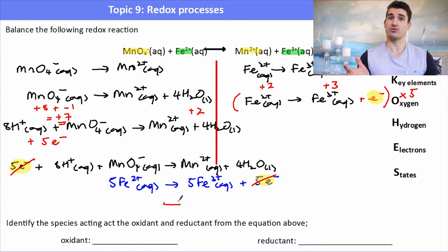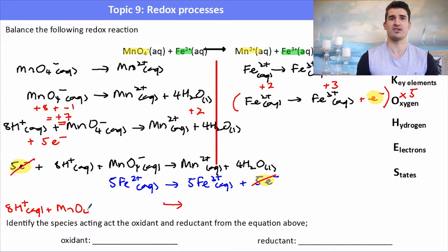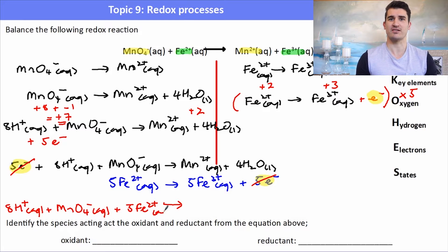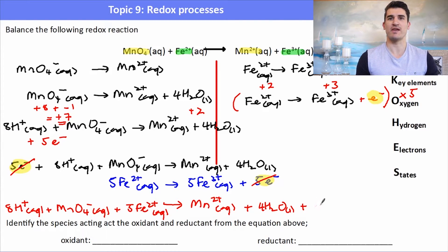I cancel the electrons, then put everything on the left of the arrows on the reactant side and everything on the right of the arrows on the product side. Because we've gone through the process of balancing at each step and balancing for the electrons, the overall reaction will be balanced. Just remember to include your states.